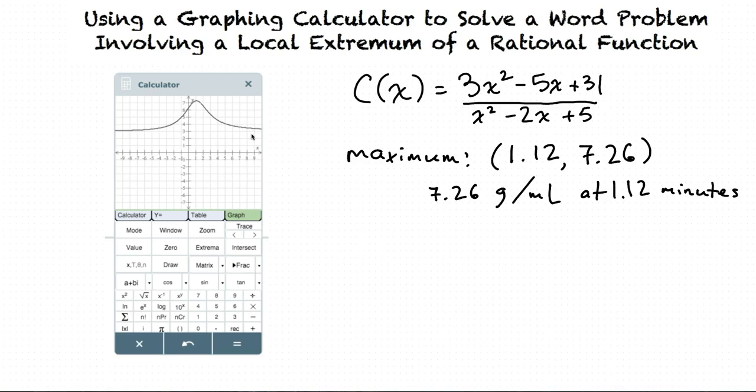This shows that there is a horizontal asymptote at c of x, or y equals 3, showing that the concentration will never be less than 3 grams per milliliter.